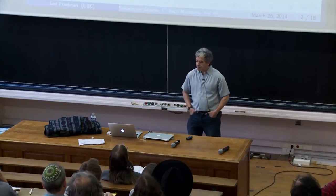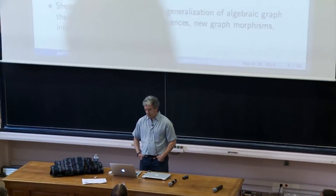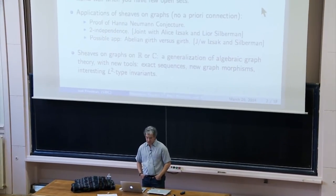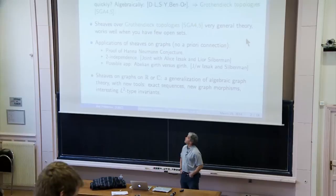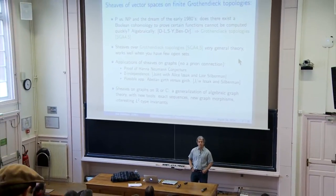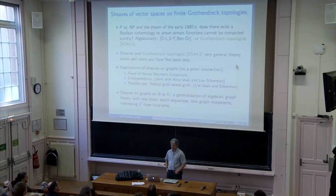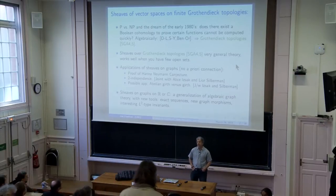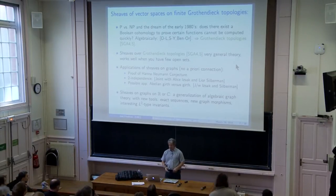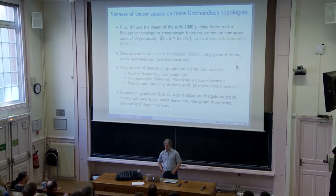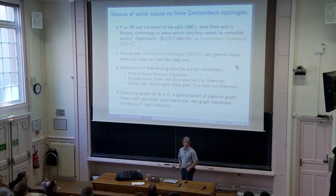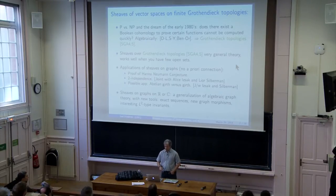Before we specialize to graphs, there was a sort of dream in the 1980s with a thesis of Michael Ben-Or that you might be able to solve P versus NP or other problems in complexity theory if you could concoct a sort of Boolean complexity theory cohomology. P versus NP is a question about Boolean algebra, and instead of attacking Boolean algebra, it's sometimes easier to attack algebraic algebra, where you study algebraic functions and try to prove that certain algebraic functions can't be computed quickly.